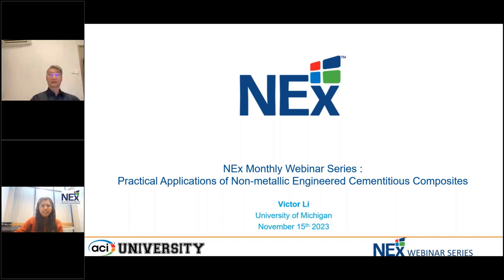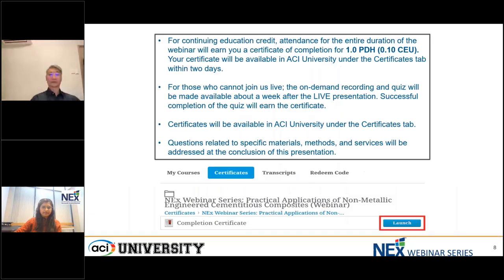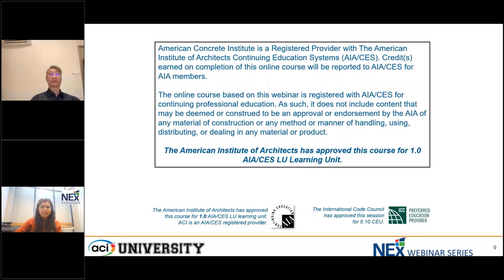A PDF of this presentation can be found in the handout box. You can use the PDF to follow the presentation and take notes if you desire. ACI is an approved education provider for the American Institute of Architects and the International Code Council, and this webinar has been approved for one learning unit.